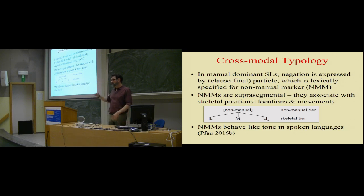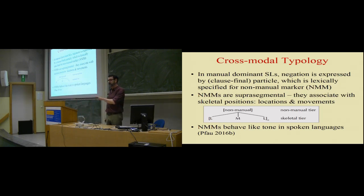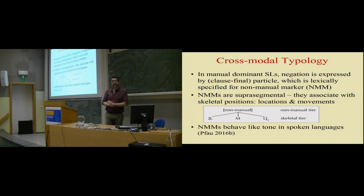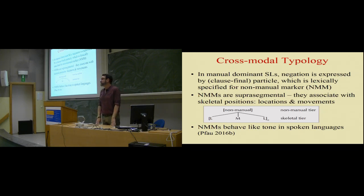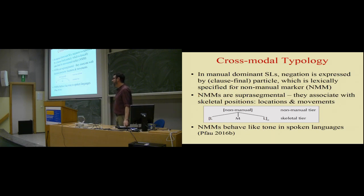With about ten minutes left, I want to say something about diachronic change. Gestures can enter the language system in sign language, which is already a diachronic change. I want to look at what people have said about the evolution of negation in spoken language and see whether this scenario can be applied to sign languages. The important scenario here is called Jespersen's Cycle, coined by Otto Jespersen around 1917, which deals with the evolution of negation, mostly in French and English.